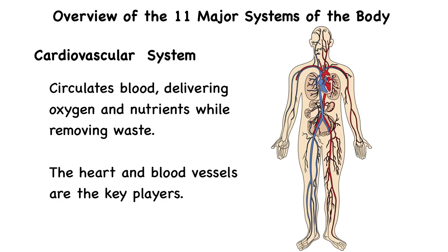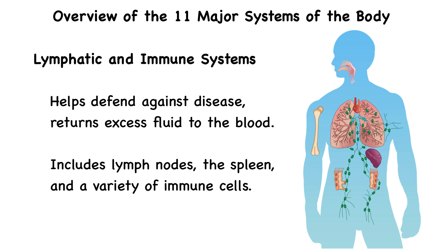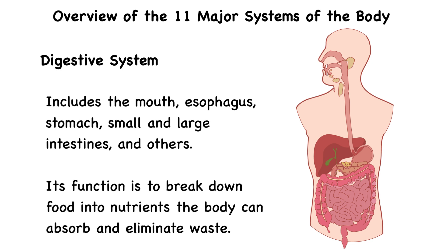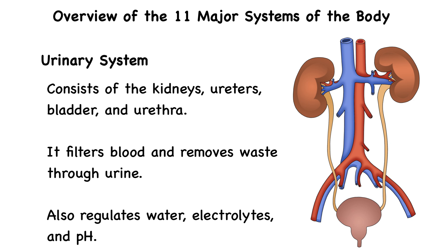Then there's the cardiovascular system, which circulates blood, delivering oxygen and nutrients while removing waste. The heart and blood vessels are the key players here. The lymphatic and immune systems help to defend against disease, return excess fluid to the blood, and include lymph nodes, the spleen, and a variety of immune cells. The respiratory system includes the lungs; it is responsible for gas exchange, bringing in oxygen and expelling carbon dioxide. The digestive system includes organs such as the mouth, esophagus, stomach, small intestine, and large intestine, and its function is to break down the food that we eat into nutrients that the body can absorb and eliminate waste. The urinary system consists of the kidneys, ureters, bladder, and urethra. It filters blood and removes waste through urine. It also regulates water, electrolytes, and pH.